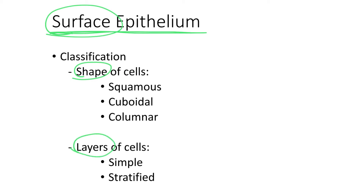When we look at the surface epithelium and we see that the cells are flat, they look like fried eggs. When you look at fried eggs from the side, you know that they are flat, and there is a little bump in the middle which is the nucleus. This shape is called squamous, and squamous makes a reference to the scales of a fish, because the scales are flat, and squamous cells are also flat.